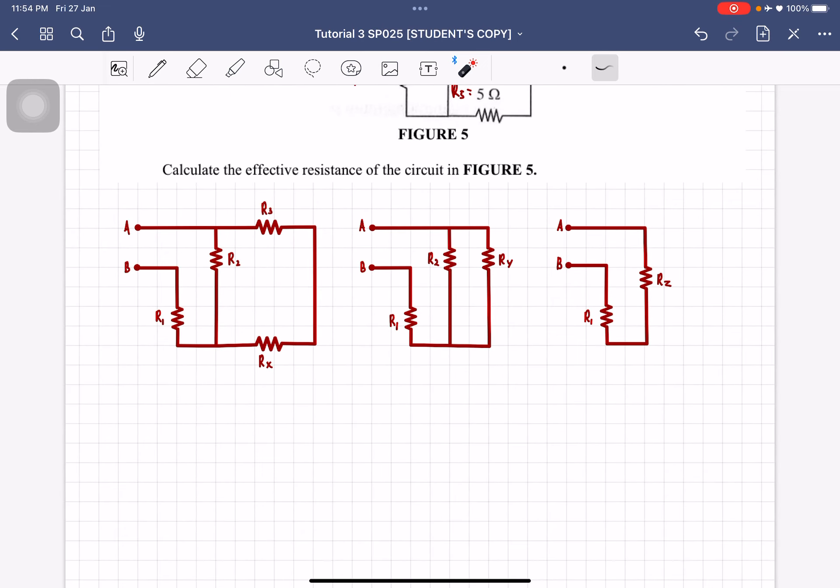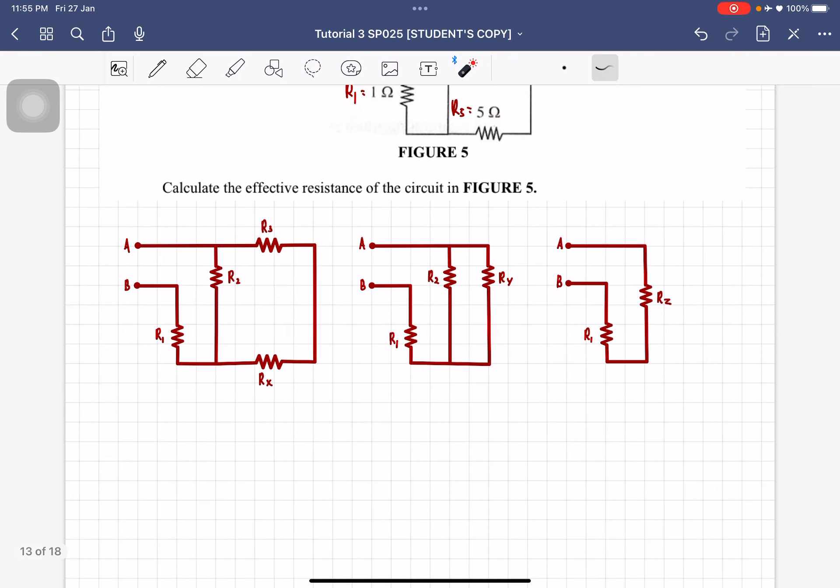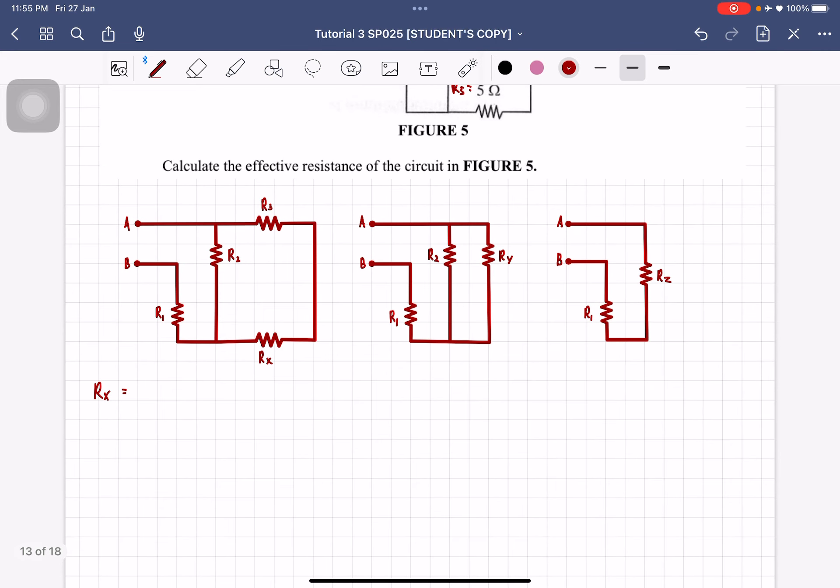So from here what I did was I simplified these two resistors here. So this is in parallel, so after that it'll be in series with R3 and Rx. So basically, Rx is the combination of R4 and R5. So that is connected in parallel, that is R4 plus R5 to the power of negative one, which will give you 20. Oh wait, let me just write down the value first. So this is 4, this is 5.